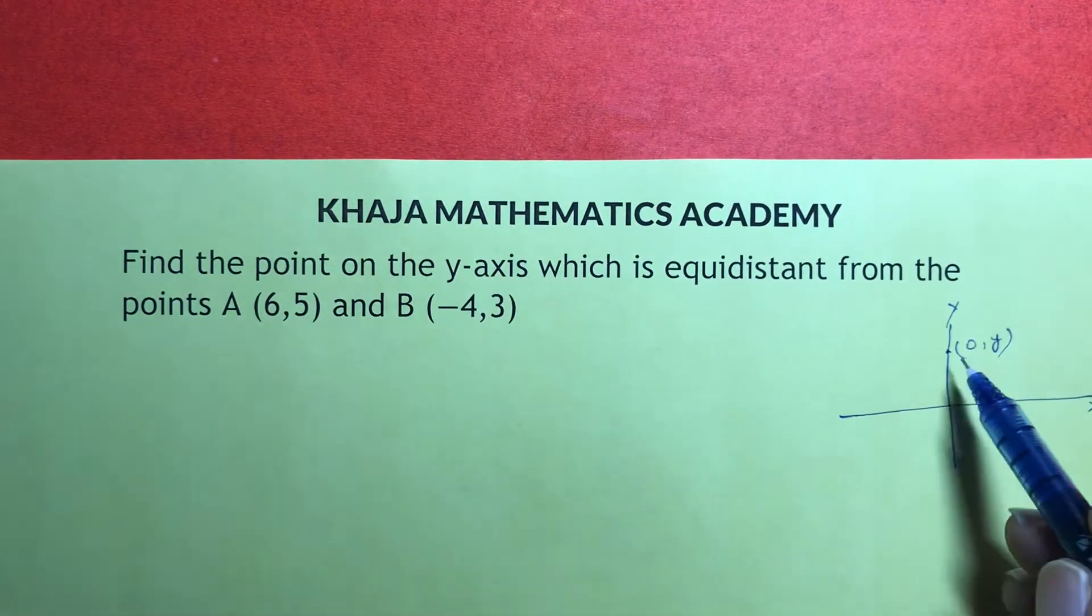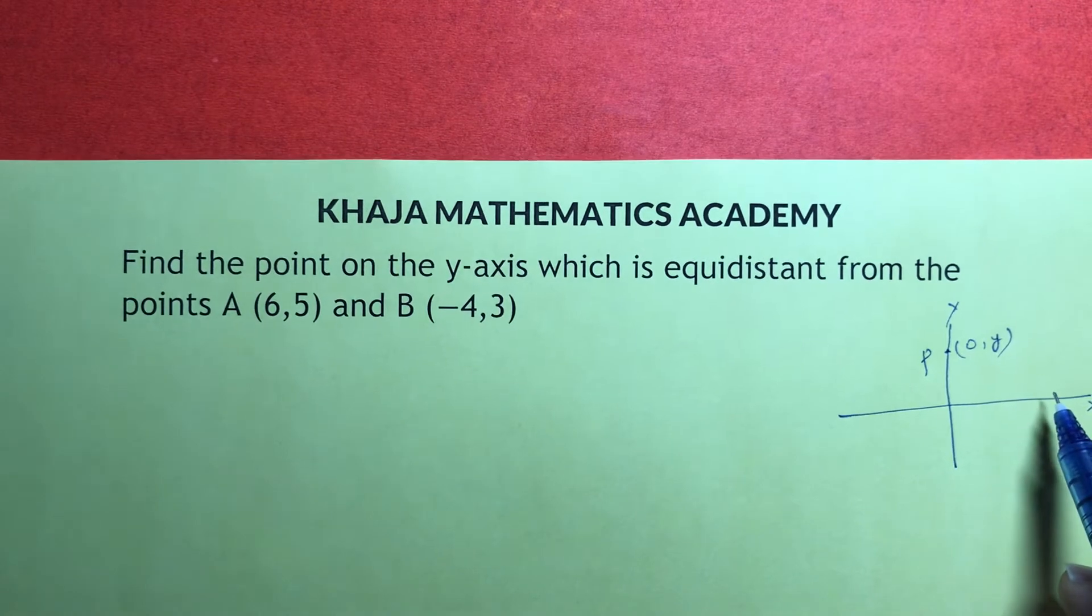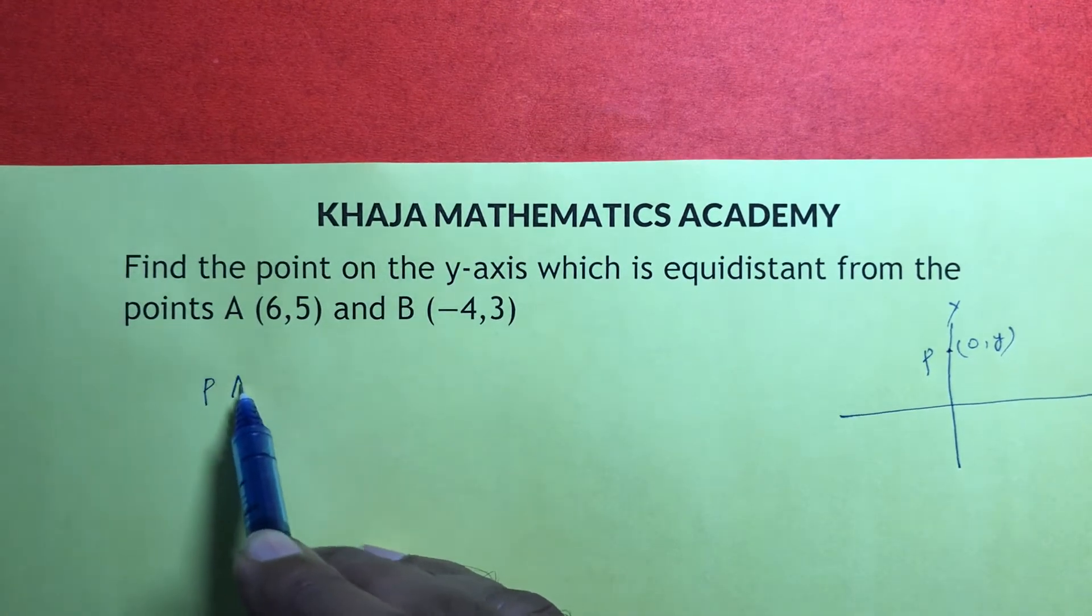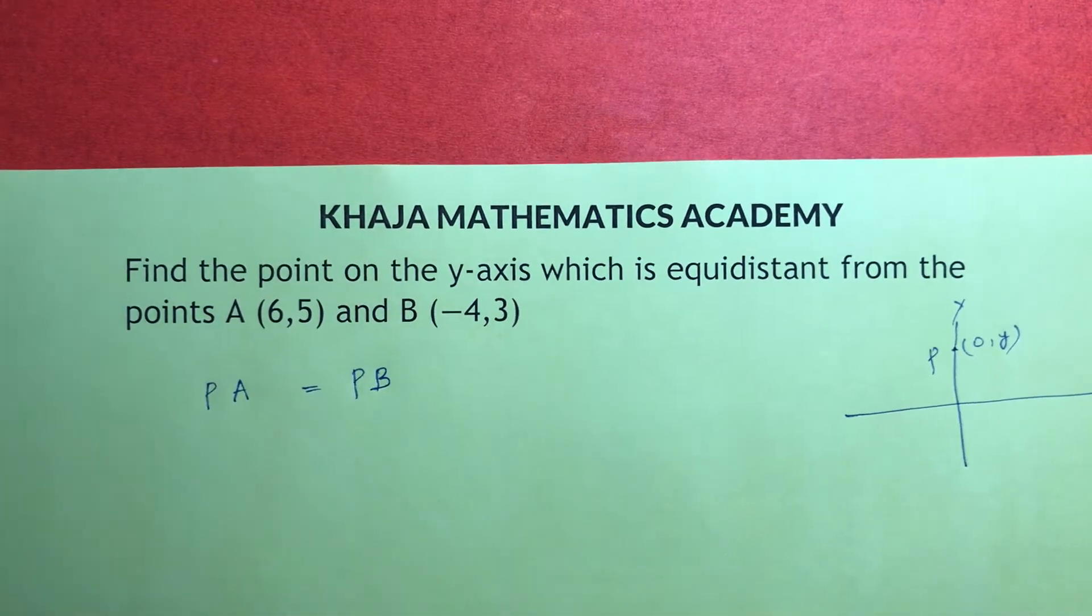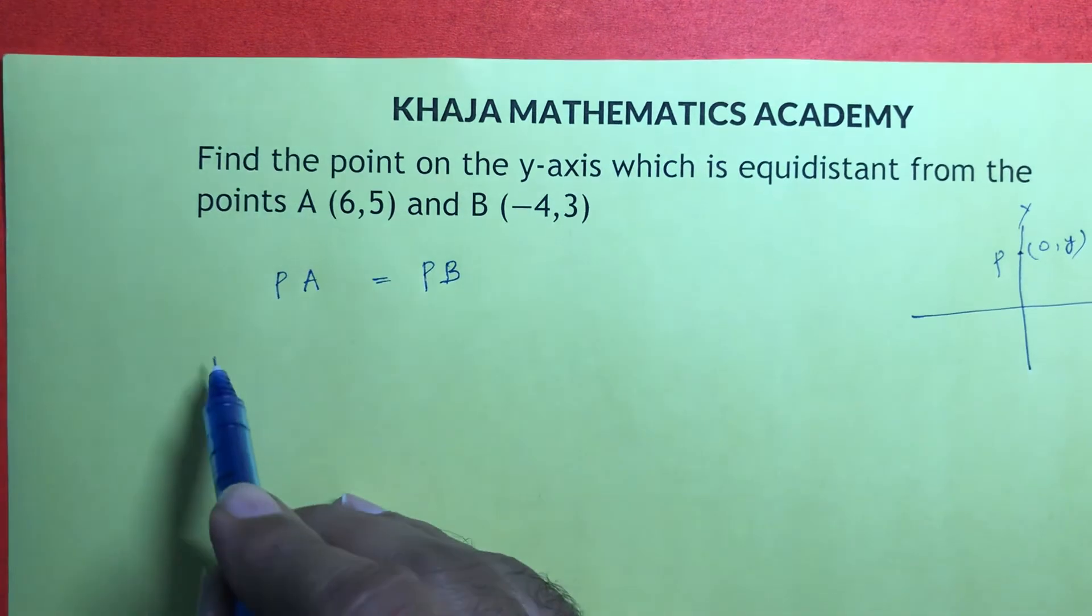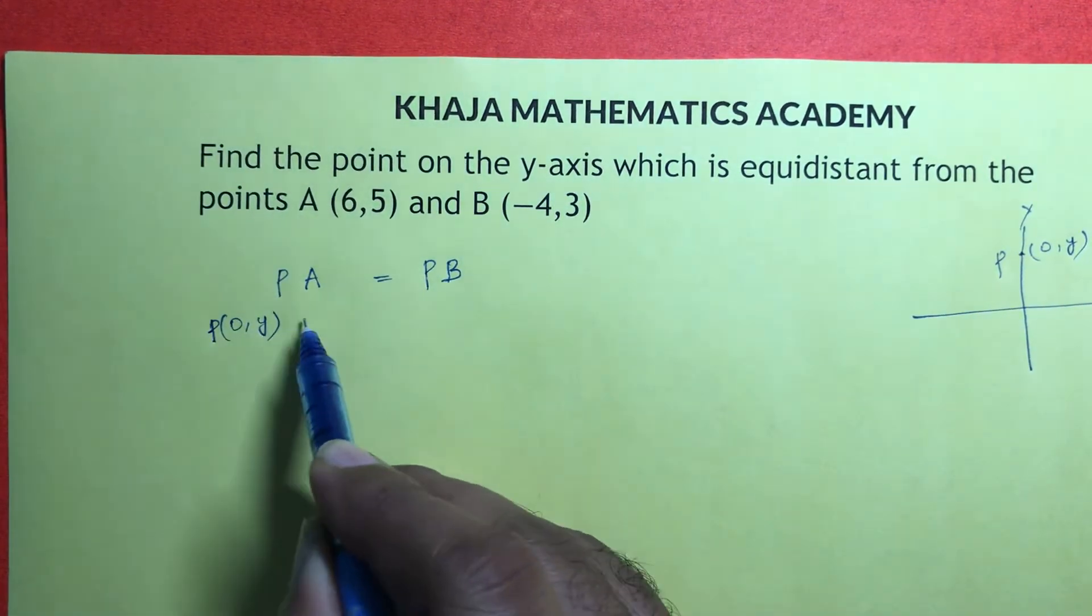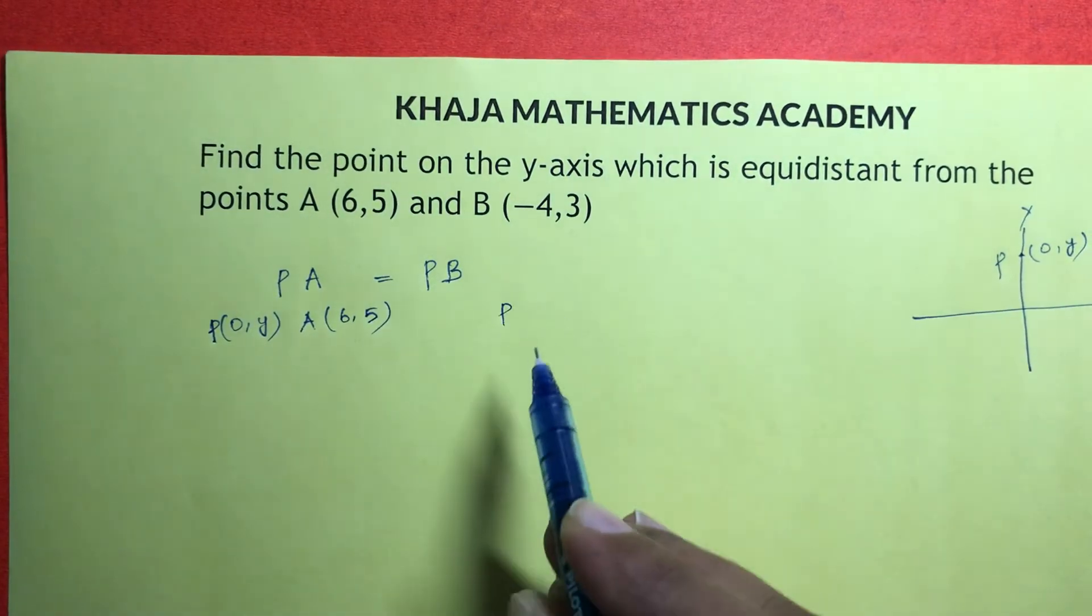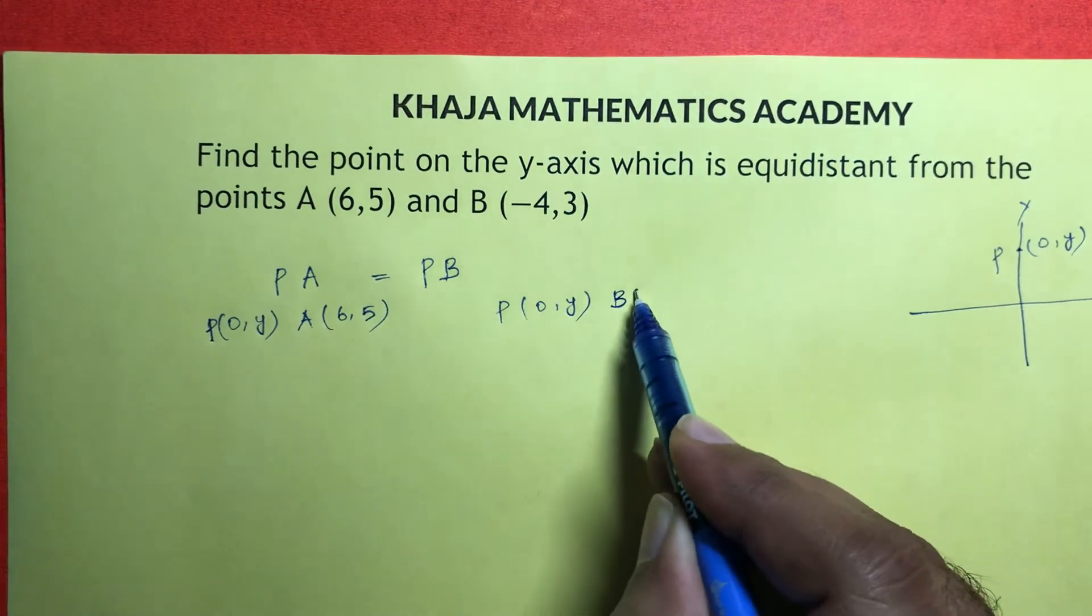So let the point be (0, y). This point is at equal distance from A and B. If we simplify this problem: P(0, y), A(6, 5), P on y-axis that is (0, y), and B(-4, 3).